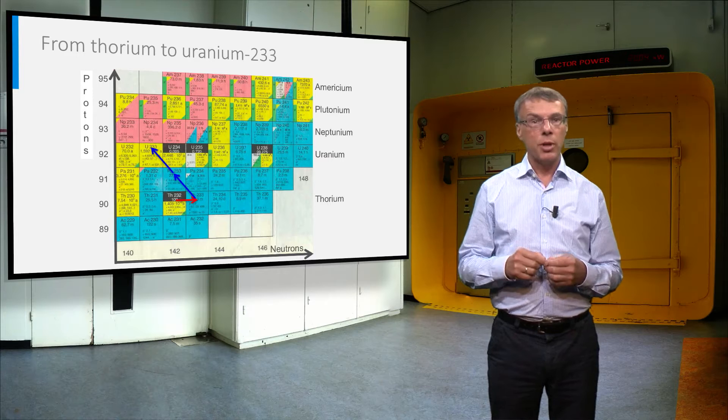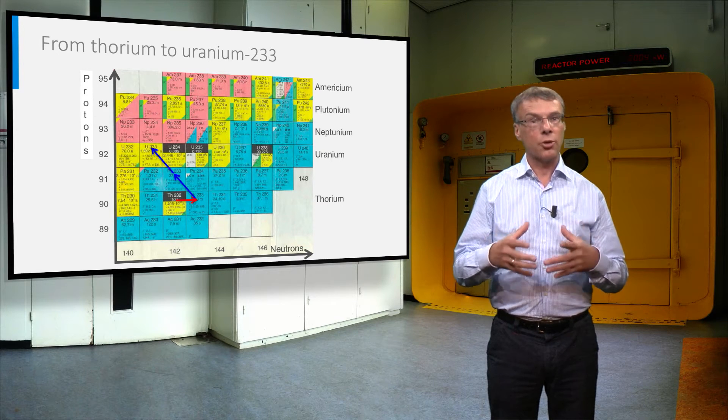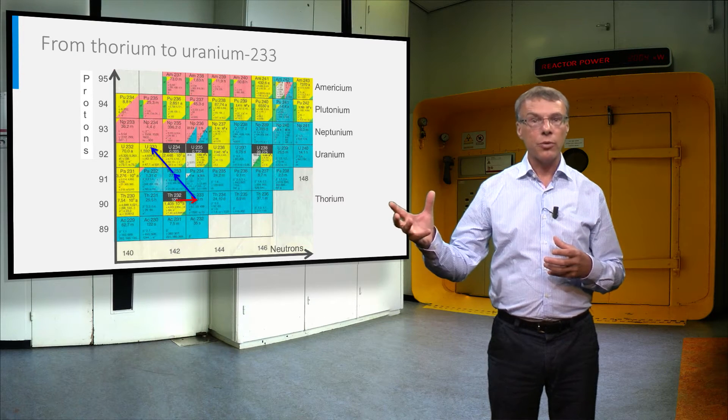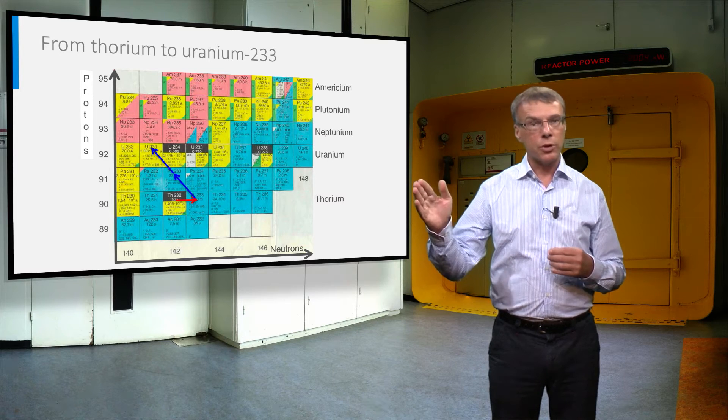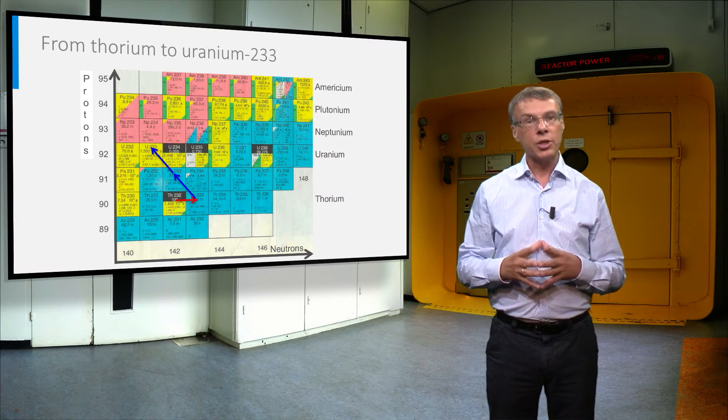This uranium isotope is an artificial one, but it is also highly fissile, just like uranium-235, which occurs in nature. In the thorium fuel cycle we first need to convert thorium-232 into uranium-233 to fission this afterwards.